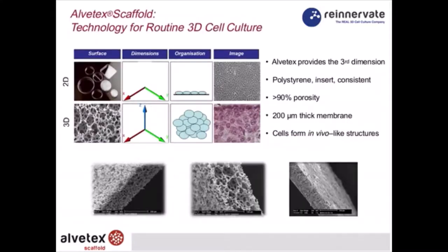So what is Alvitex? In the 2D situation, cells grow as a monolayer in conventional vessels. In the 3D Alvitex situation, we've taken polystyrene and changed its geometry. Essentially, what we've created is a three-dimensional, highly porous polystyrene scaffold. Cells are able to enter this material, they do not flatten out, they reside with their neighboring cells, and they form three-dimensional structures within it.